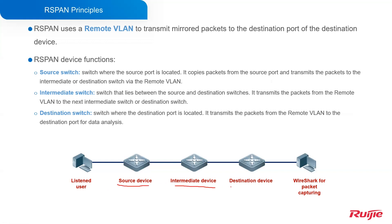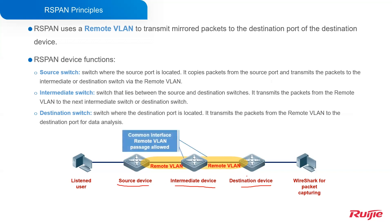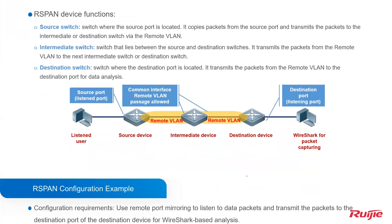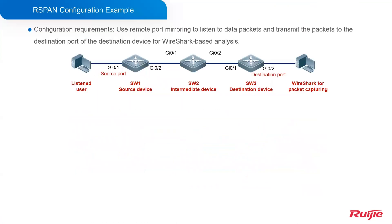In this figure, there is the source device, intermediate device, and destination device. On these devices, we should create the remote VLAN. The remote VLAN is the VLAN used only for R-SPAN. The source port is on the source device, and the destination port is on the destination device. Now let's see the configuration.